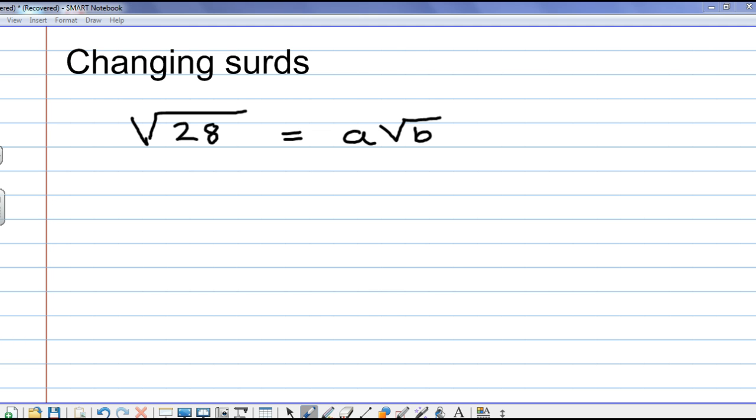Just a reminder, square numbers are 1, 4, 9, 16, 25, etc. What's the largest square number that's a factor of 28, that divides into 28? And the answer is 4. So, we divide 28 by 4, I get 7.